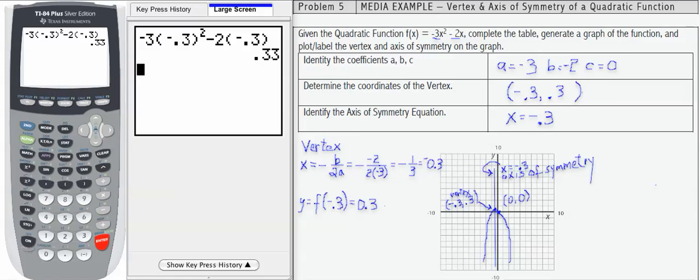So what I've done here is I've drawn a vertical line going right through the vertex. That's going to cut the parabola in half. The equation of that line is x equals negative 0.3. That's the x-coordinate of the vertex. I've identified this as the axis of symmetry.